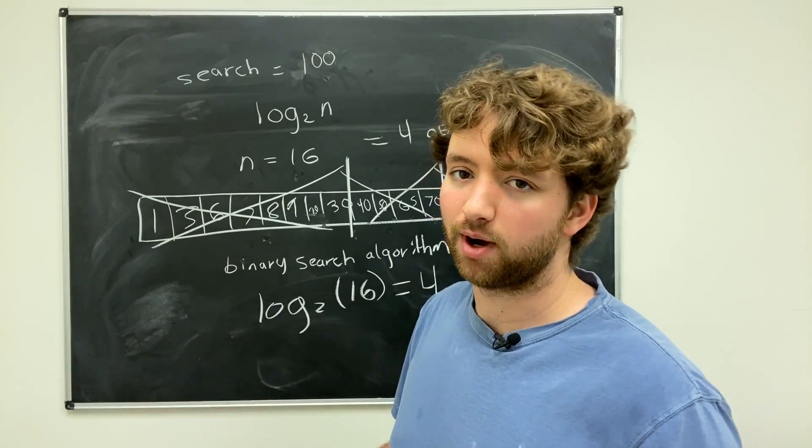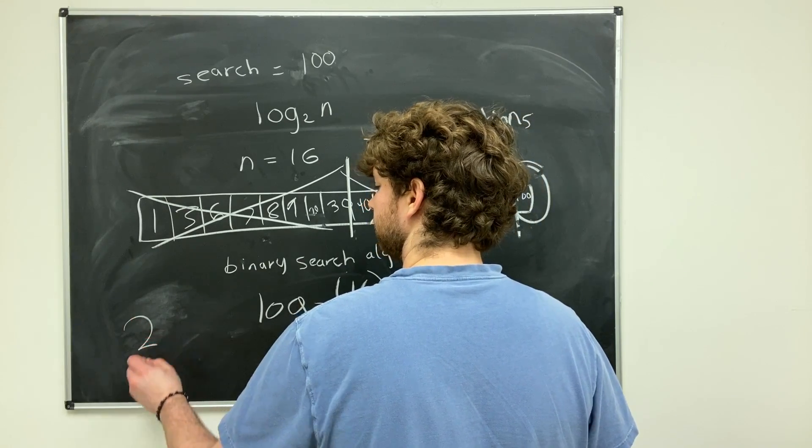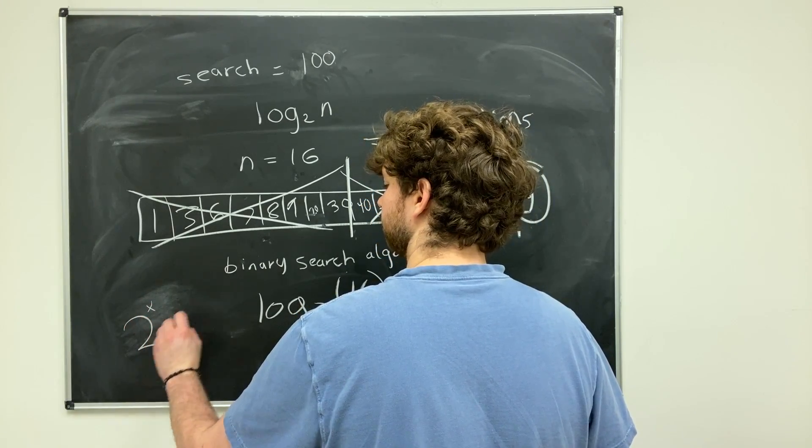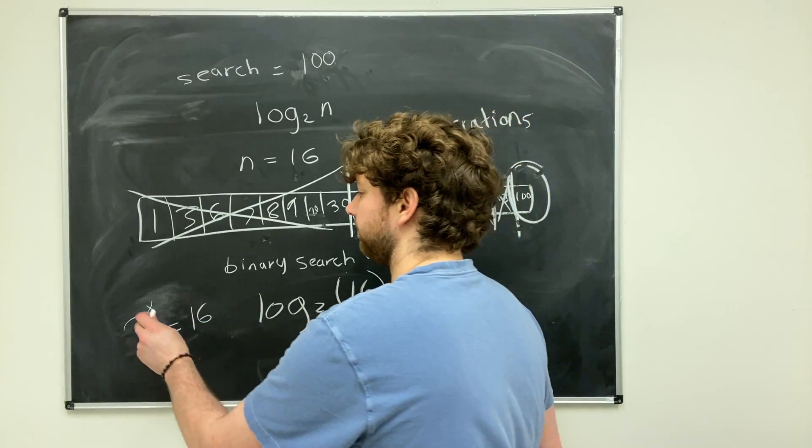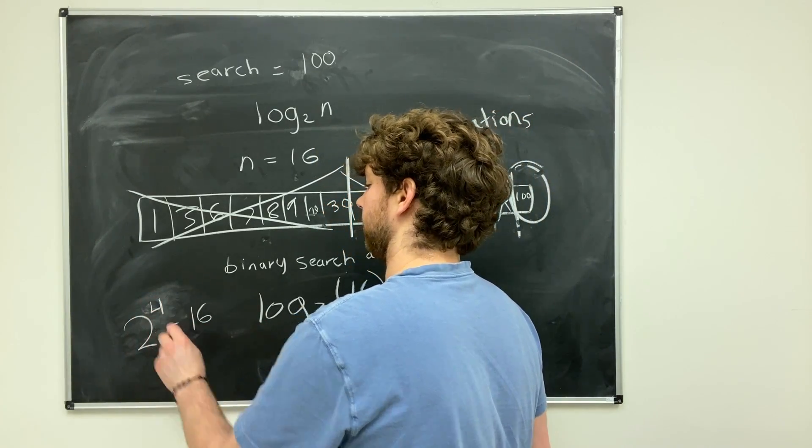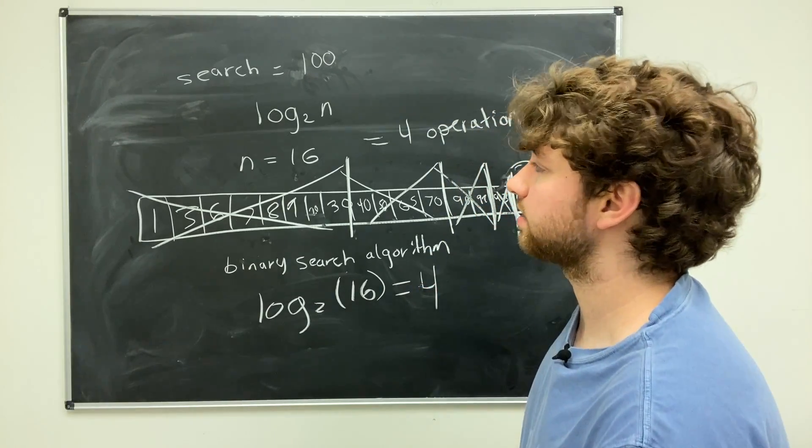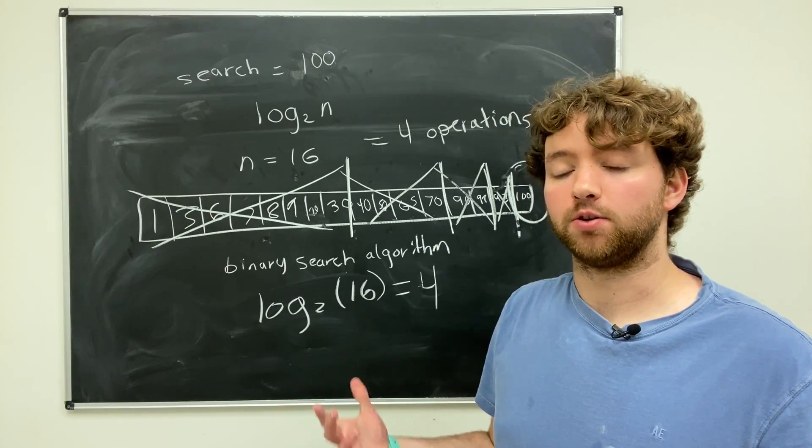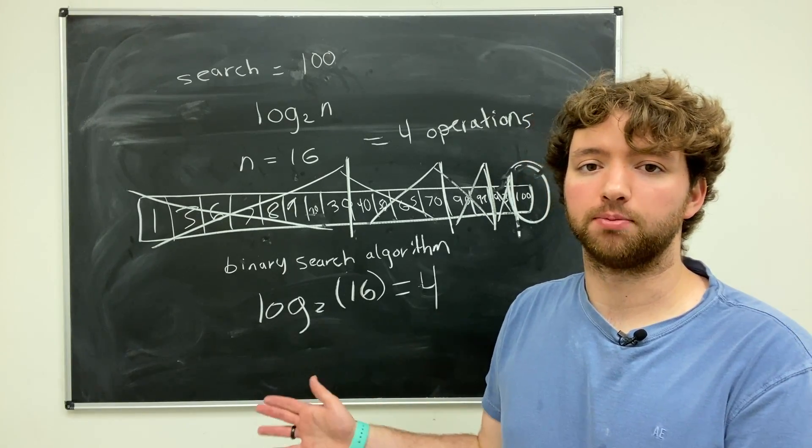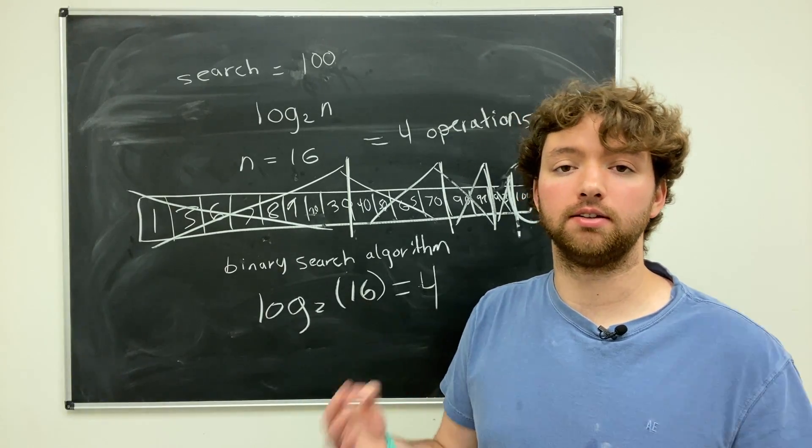And this might be embarrassing, but I always have to remind myself how logarithms work. We're basically saying 2 to the x is equal to 16. And that number right there is going to be 4 in this case. So that's where this number comes from. So that is an example of a logarithmic algorithm complexity, where the amount of data we have to work with cuts in half every single operation. Very nice, very fast. This is faster than linear time.